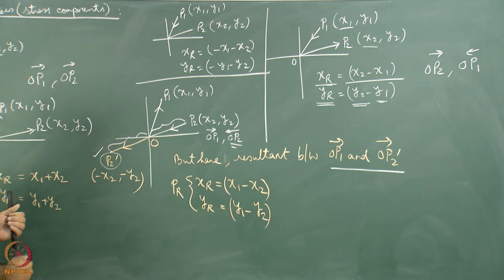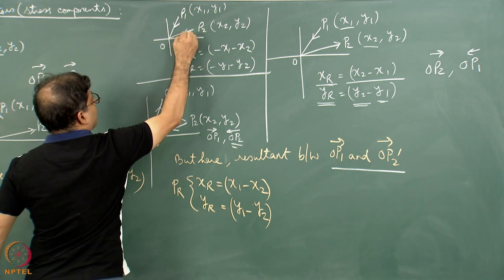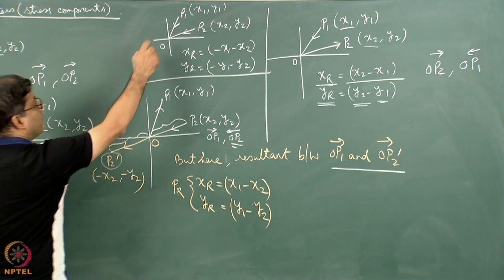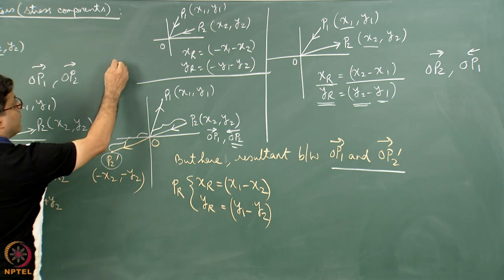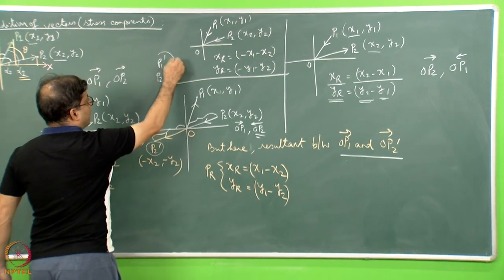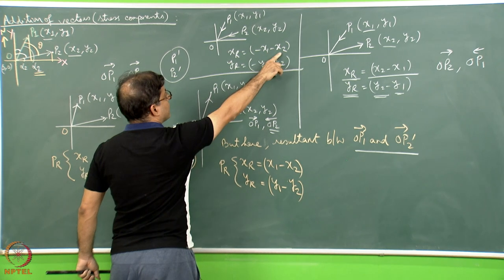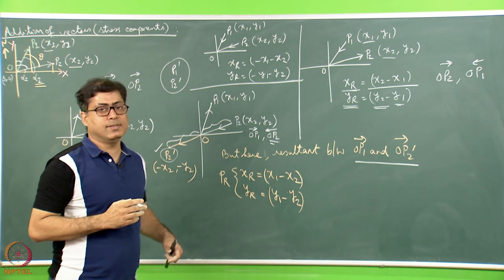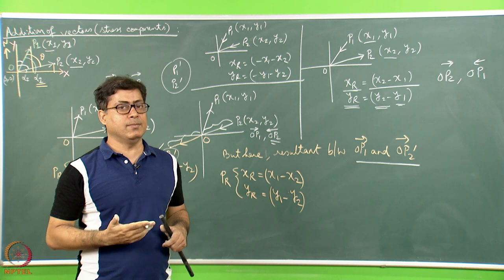Now take another case where from P1 to O there is a stress acting, and from P2 to O there is also a stress acting. The coordinates of P1 and P2 are all positive: (x1, y1) and (x2, y2). We find P1-dash and P2-dash coordinates, giving the resultant as xr = −x1 − x2 and yr = −y1 − y2. Once this is understood in the 2D case, we can extend it to three dimensions and also to n-dimensional cases.